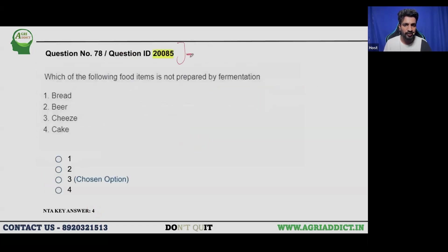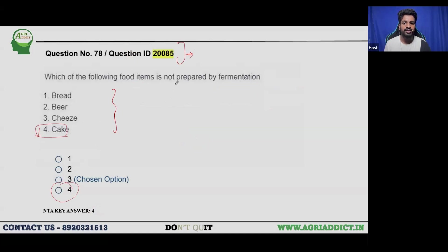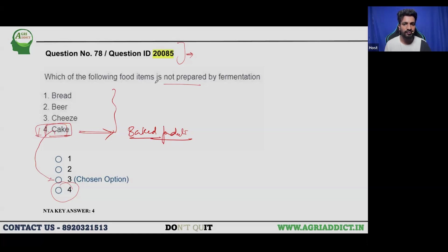I also want to discuss one question that created a lot of confusion. Initially we were also unsure, but after research we found that cake — given as a key answer — is not a fermentation product; it is classified under baked products. Students claimed all options were fermentation products, but since cake is a baked product, the key answer is justified. Therefore, we are not going to challenge this question.